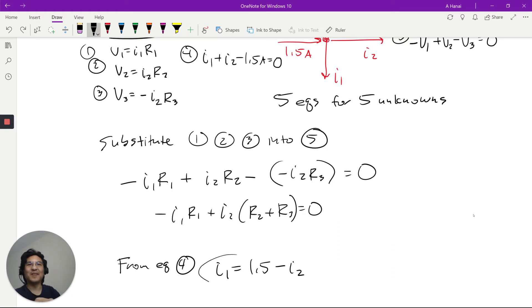But now we can take this and substitute it right there. So if I write that out, minus I1*R1 plus I2. Right, so now there's only one unknown.